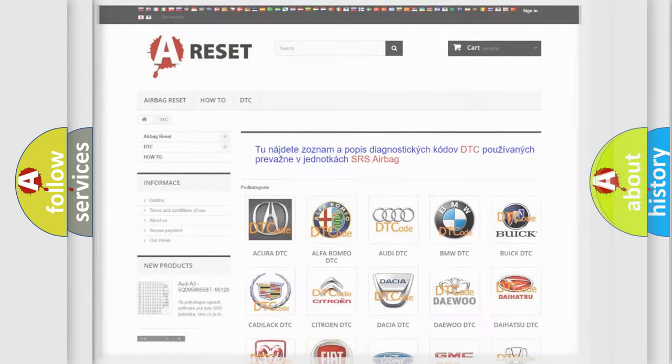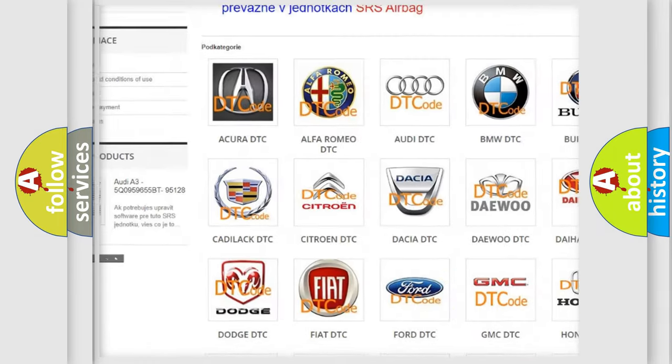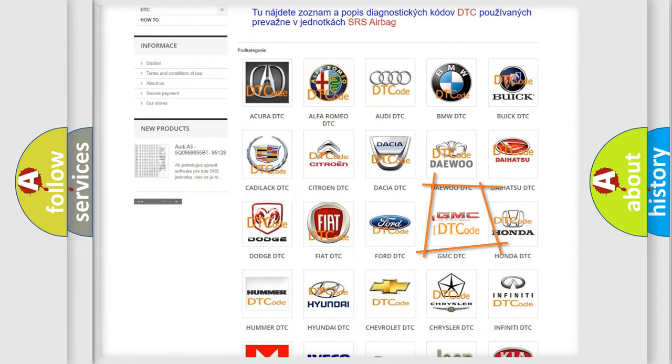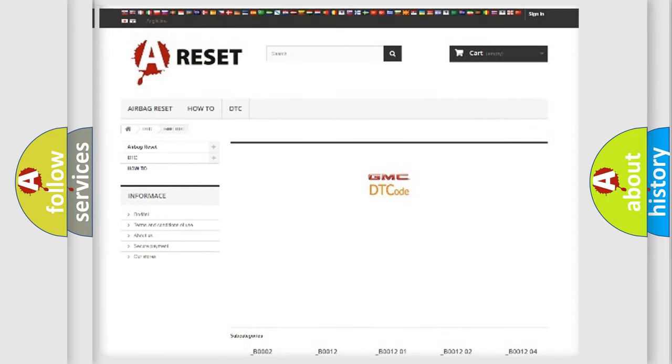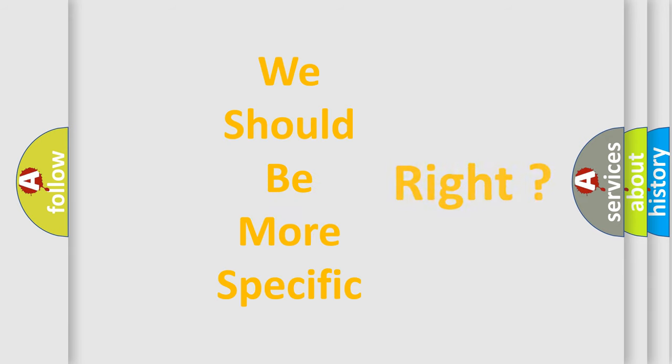Our website airbagreset.sk produces useful videos for you. You do not have to go through the OBD2 protocol anymore to know how to troubleshoot any car breakdown. You will find all the diagnostic codes that can be diagnosed in GMC vehicles, and many other useful things. The following demonstration will help you look into the world of software for car control units.